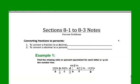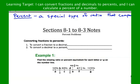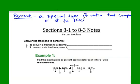Any conversation about percents probably should start with a definition of what percents are. Write this at the top of your notes: a percent is a special type of ratio that compares a number to 100. The key things here are the fact that this is a ratio — it's another way to write a ratio — and the fact that we're comparing it to 100.